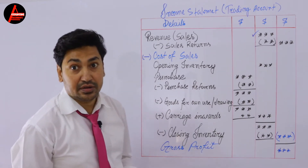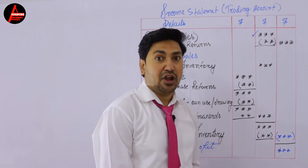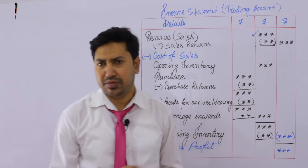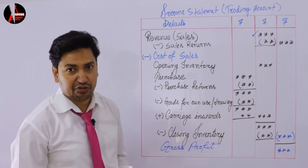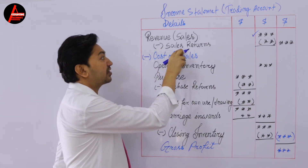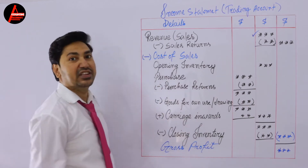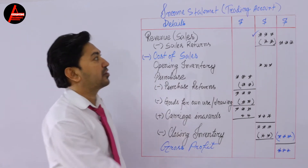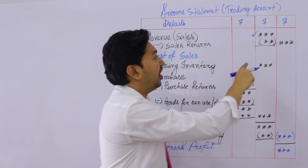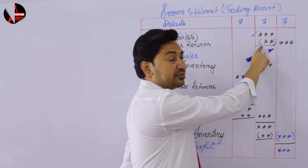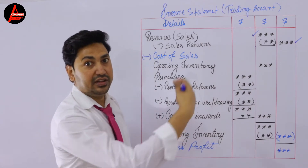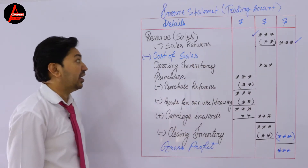Then what should you write next? Sales return. This will be given in the trial balance as well — sometimes it will be given, sometimes not. If you have it in the trial balance, take it and subtract the sales return from your sales revenue. Put this value under sales revenue — the bracket means you subtract — then write the answer in the outer column.